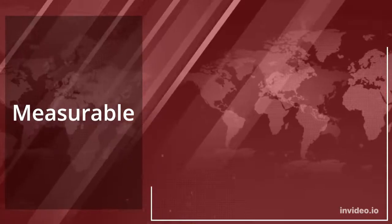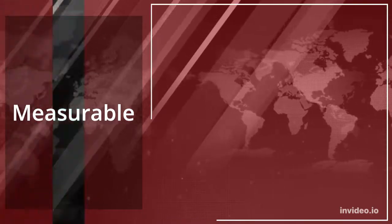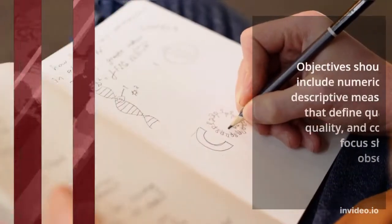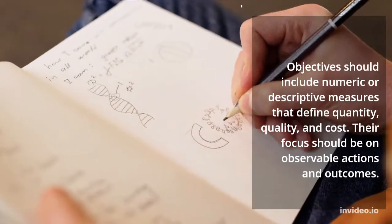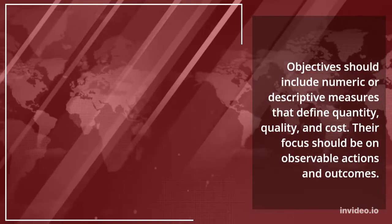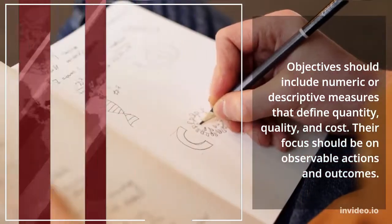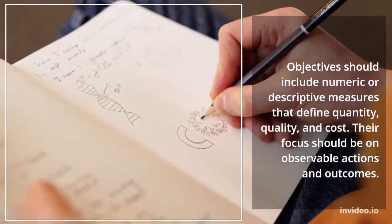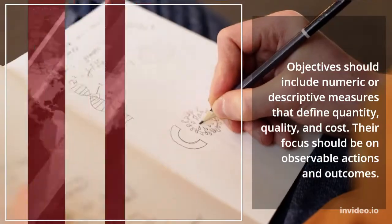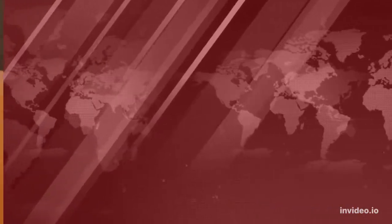Measurable: Objectives should include numeric or descriptive measures that define quantity, quality, and cost. Their focus should be on observable actions and outcomes.